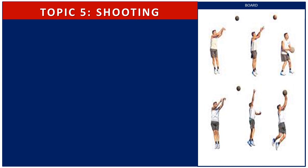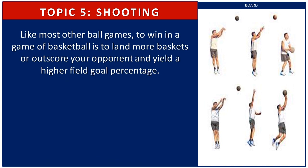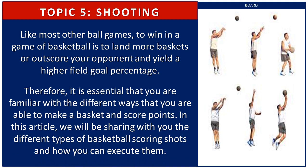Let us now proceed to topic 5 — shooting. A basketball shot is throwing the basketball toward the hoop. Types include: a shot that hits the rim and bounces out; a bank shot that bounces off the backboard before passing through the hoop; and a dunk shot where the basketball is propelled downward into the basket. To win in basketball is to outscore your opponent with a higher field goal percentage, so it is essential to be familiar with the different ways to make a basket and score points.